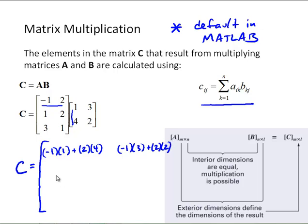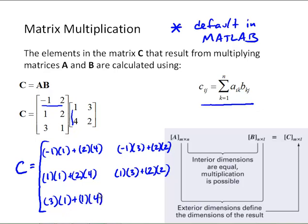Then we can move down to the second row and we get 1 times 1 plus 2 times 4. And 1 times 3 plus 2 times 2. And lastly we get 3 times 1 plus 1 times 4. And for our last element it's going to be 3 times 3 plus 1 times 2.